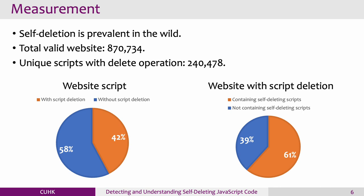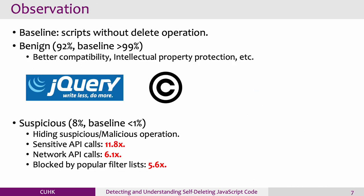We found 42% of websites have at least one script deletion operation. Among these websites, 61% also contain self-deleting scripts as we defined. We found 92% of self-deleting scripts in our samples are benign. Third-party libraries like jQuery use this technique to achieve better compatibility.